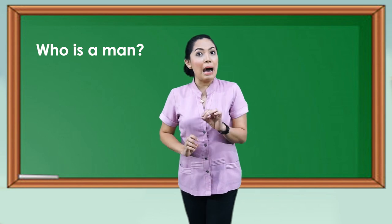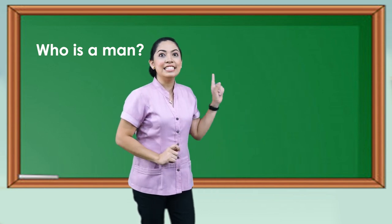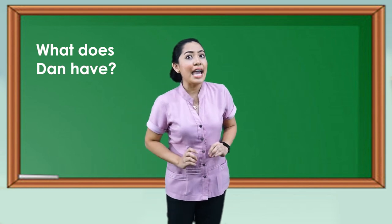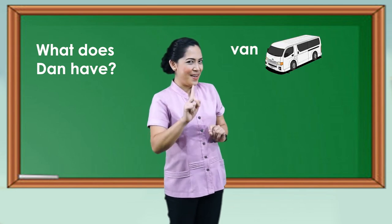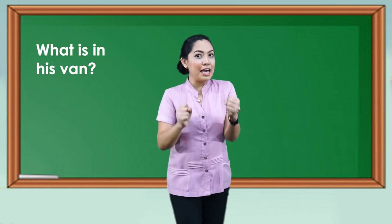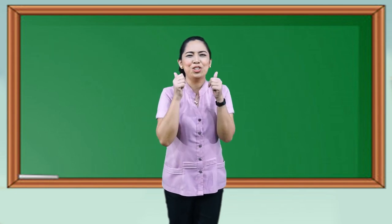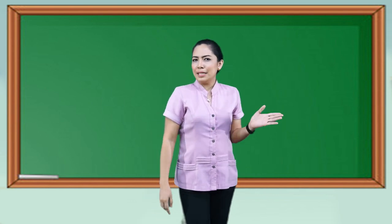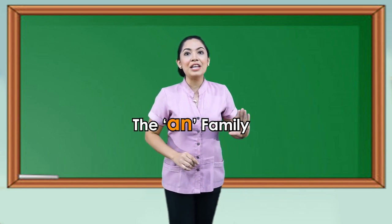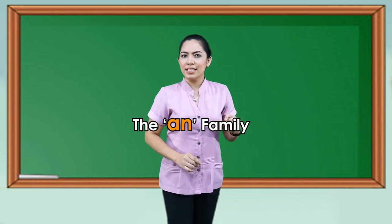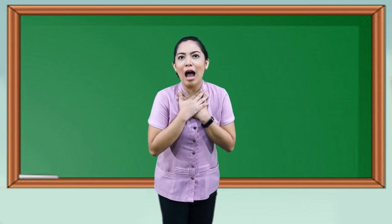Now let's answer these questions to see how much we understood. Who is a man? Correct — it's Dan. What does Dan have? A van. Amazing! What is in his van? A can. So what word family did we discuss today? That's right — the '-an' family!